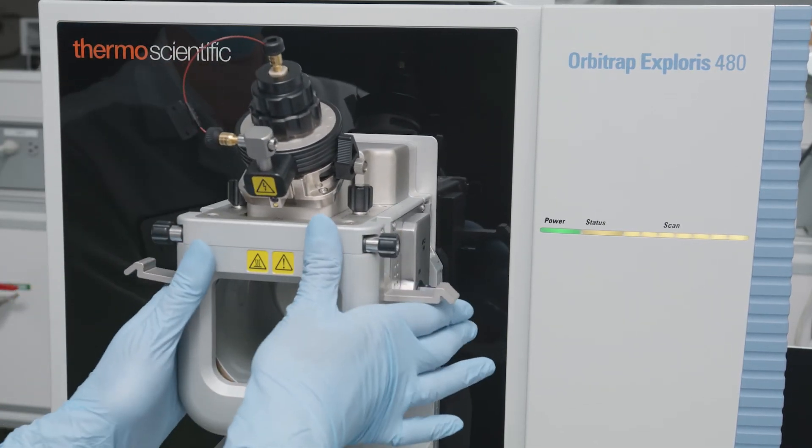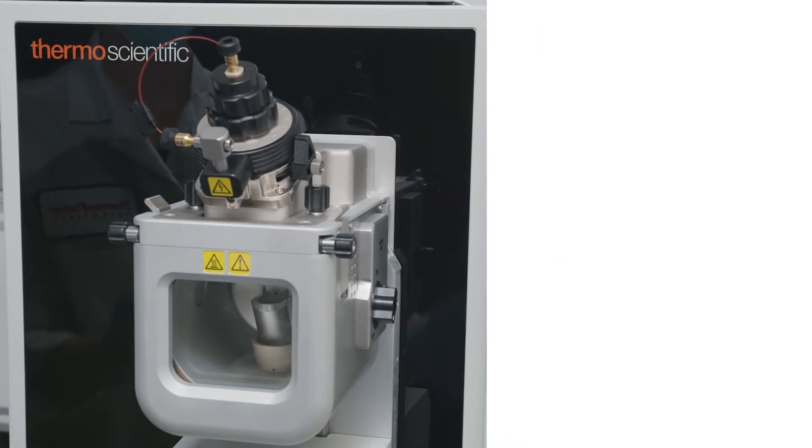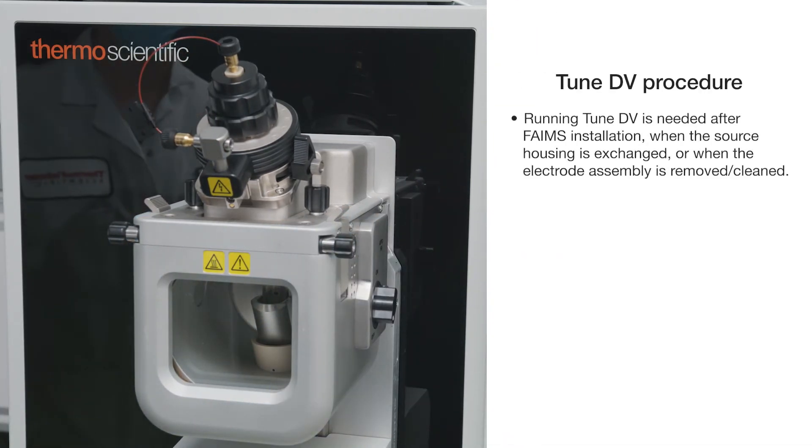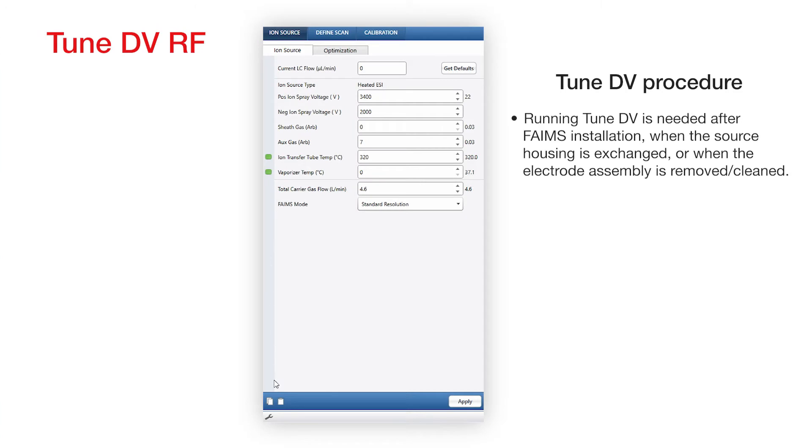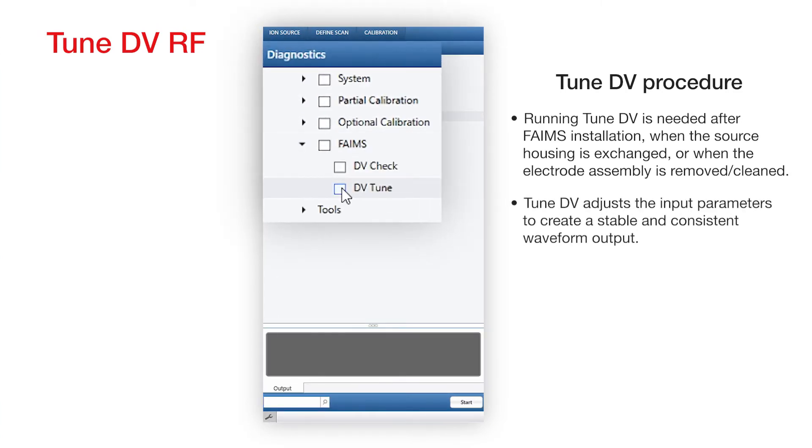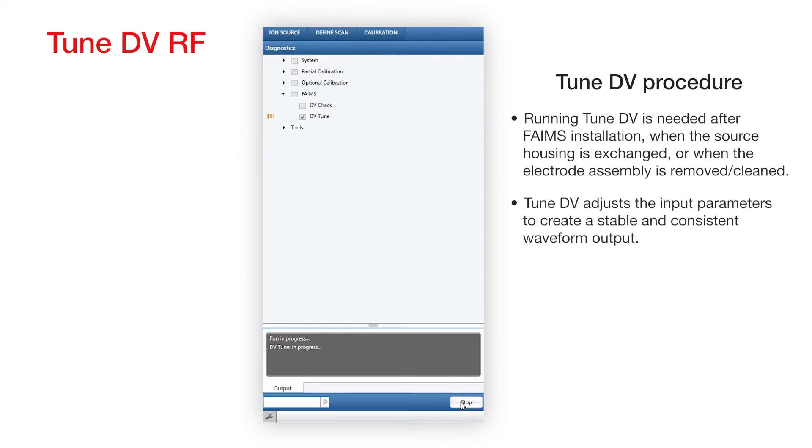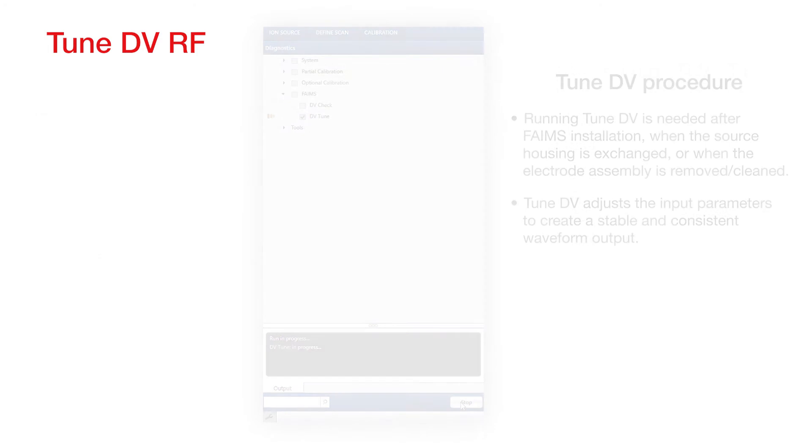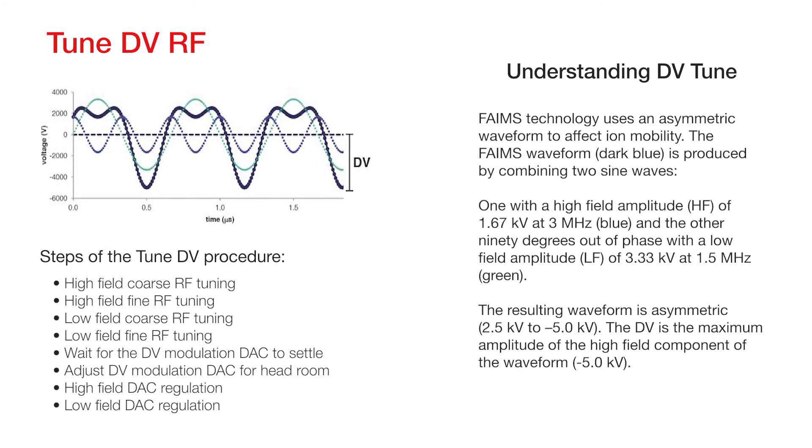install the ion source and run the TuneDV procedure. Running TuneDV is needed after FAIMS installation, when the source housing is exchanged, or when the electrode assembly is removed or cleaned. TuneDV is located under the diagnostics tab in the interface. This process adjusts the input parameters to create a stable and consistent waveform output. FAIMS technology uses an asymmetric waveform to affect ion mobility.